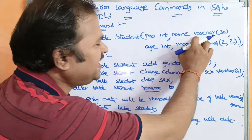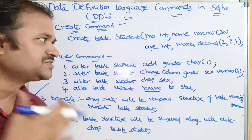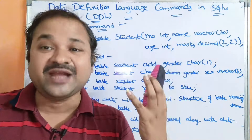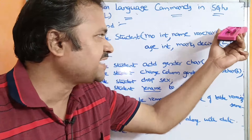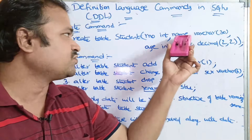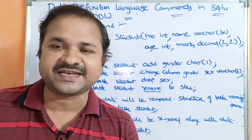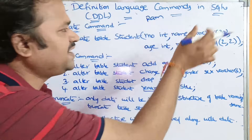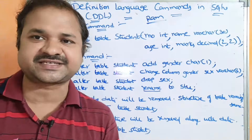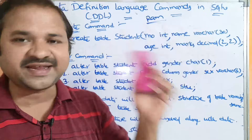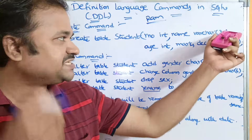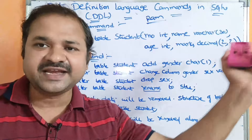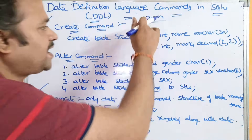The second column is 'name', which is of type VARCHAR. VARCHAR stands for variable characters, meaning it is variable length. Here the maximum size is 30 characters, so name can accept a maximum of 30 characters. If we enter 'Ram', then it occupies only 3 characters. That is the advantage of VARCHAR — it is variable length, so if the length is 3 characters, it occupies only 3 characters.